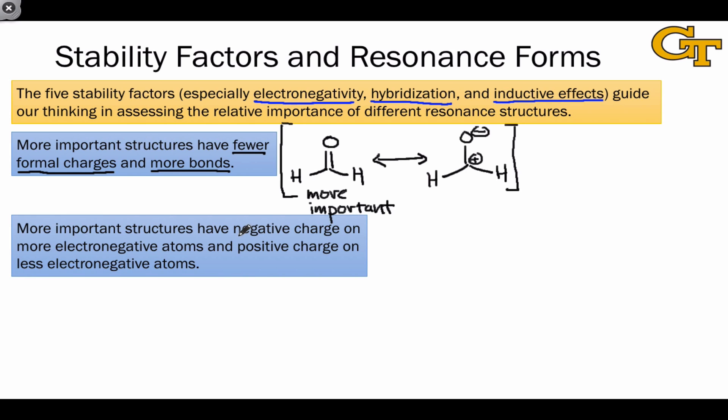Our second guideline is that more important structures have negative charge on more electronegative atoms and positive charge on less electronegative atoms. This is almost identical to the phrasing we used in the electronegativity stability trend. And as an example of this, we can compare the formic acid and formamide resonance structures that we looked at in the introduction to this video. The question we're asking here is: which of these two resonance forms is more important to its respective molecule?